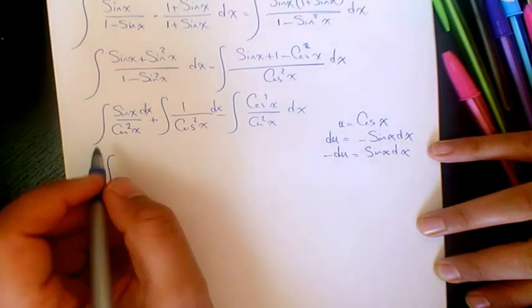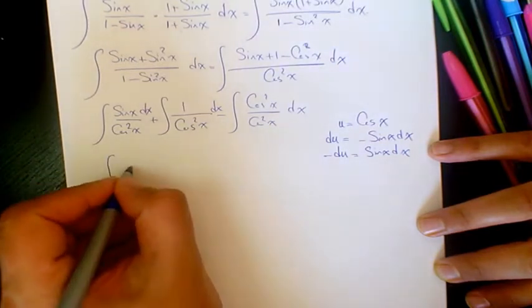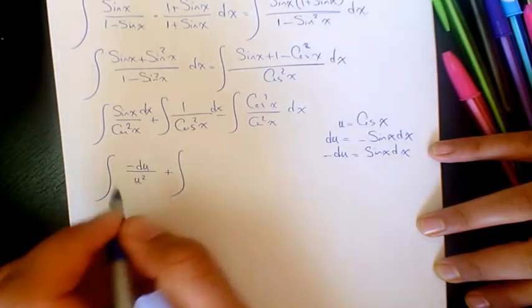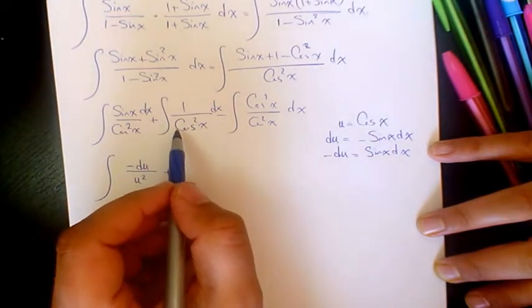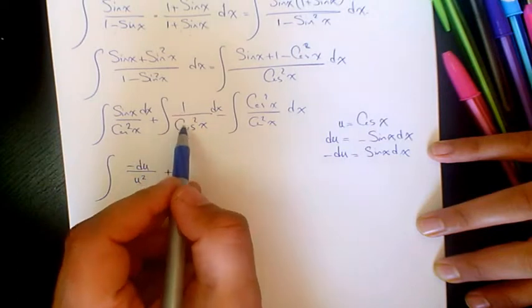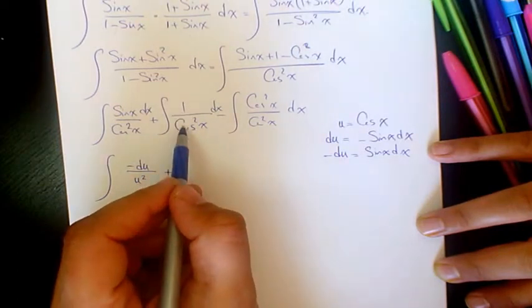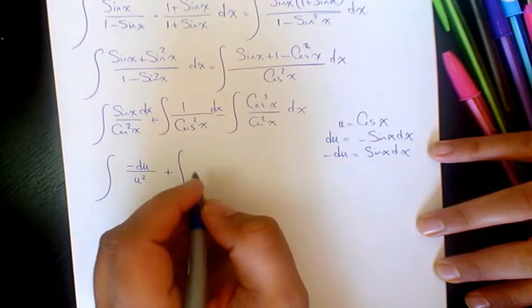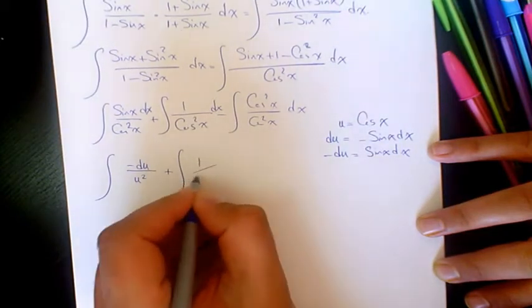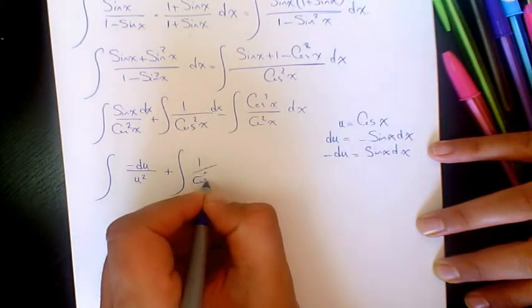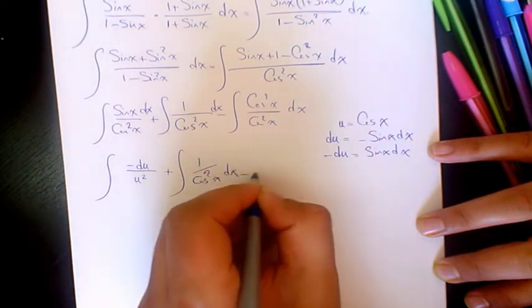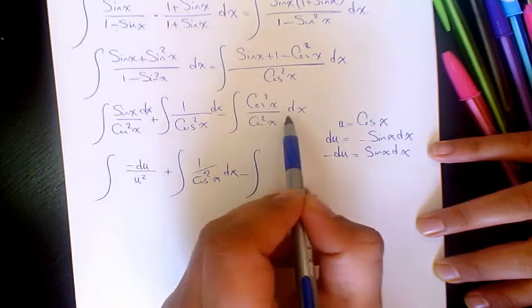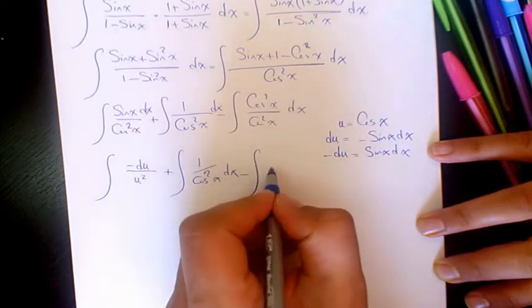So I'm going to have negative du over u squared. And here we have 1 minus sine squared x, the derivative of this part I'm going to find out later on. And here we have cosine squared x, which is going to be 1 dx.